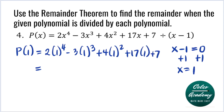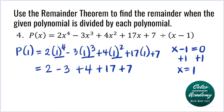Simplifying: 1 to the fourth is 1, times 2 we have 2. 1 to the third is 1, times negative 3 we have minus 3. 1 squared is 1, times 4 we have plus 4. 17 times 1 is 17, and then plus 7. Simplifying from left to right: 2 minus 3 is negative 1; negative 1 plus 4 is 3; 3 plus 17 is 20; 20 plus 7 is 27.